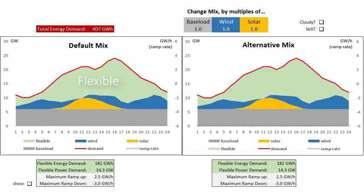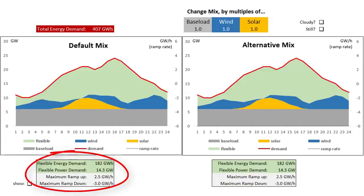Above the inflexible sources, to make sure we do meet that varying demand curve, we've got what I've called flexible generation. That can be a mix of things: gas generation, hydro, generation out of storage, interconnectors, and conceptually things like demand response. That green area is essentially energy sources that we can vary when we want to, filling the gap above wind, solar, and baseload, which are much more inflexible. The total energy demand — the total area under that red line — is 407 gigawatt hours, of which those flexible sources are providing 182 gigawatt hours.